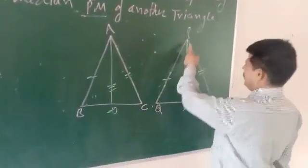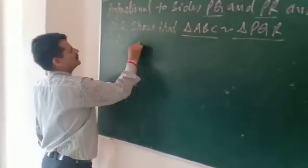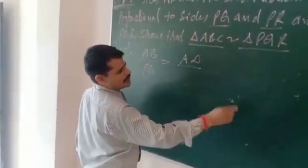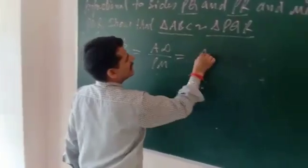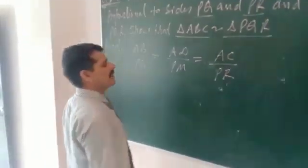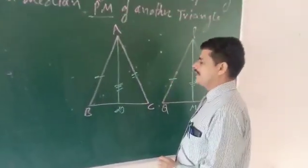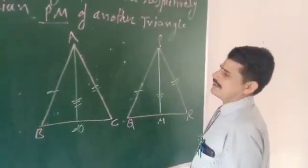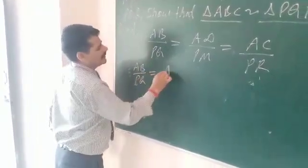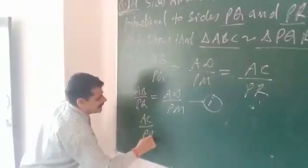This is AB and PM. AC and the corresponding side is PA. In the first case AB upon PQ which is the median ratio and the other which is AC upon PR which is the median ratio.